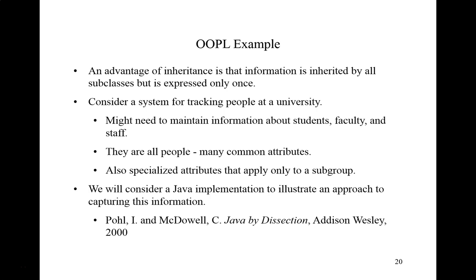An advantage of inheritance is that information is inherited by all subclasses but is expressed only once within the system. Consider a system for tracking people at a university. We might need to maintain information about students, faculty, and staff — these are all people. Thus, there are many common attributes of a person. A student would possess these, faculty would possess these, and a staff member would also possess these common attributes. But there are some properties or characteristics that are distinctive of a student, others distinctive of faculty, and others distinctive of staff — these are the specialized attributes that apply to only a subgroup.